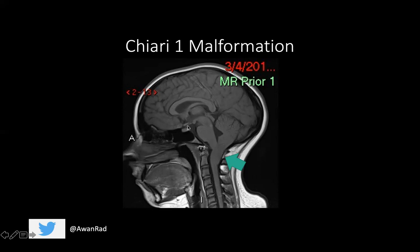This is a sagittal T1-weighted image through the brain. Typically, patients with Chiari 1 can be asymptomatic, but they can present with an occipital headache about 30% of the time, and they can also have cerebellar symptoms like ataxia and nystagmus. Chiari 1 patients typically present later on in life, not necessarily as a child.